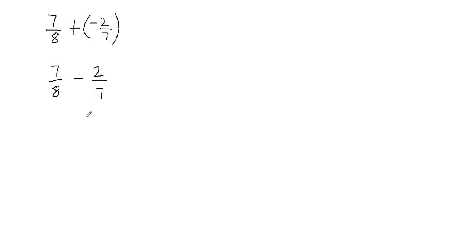I cannot subtract these fractions because I don't have a common denominator. To find the common denominator, I'll simply multiply my denominators: 8 times 7 is going to be 56. So I know that the least common denominator is going to be 56.